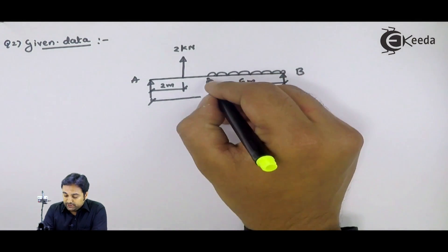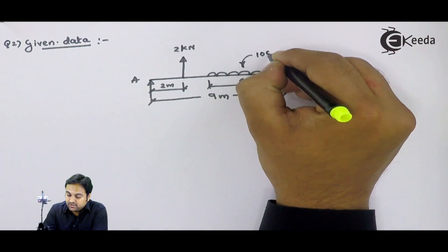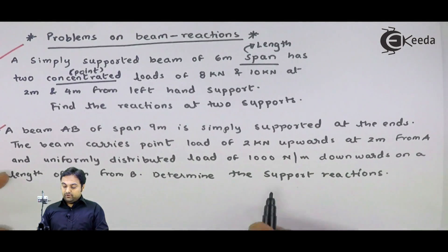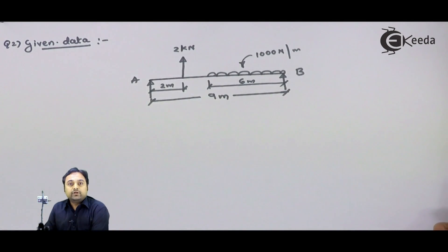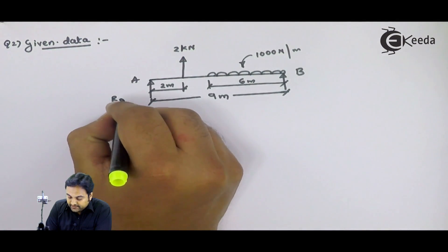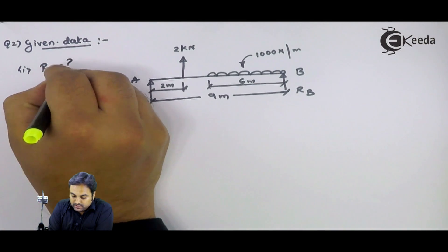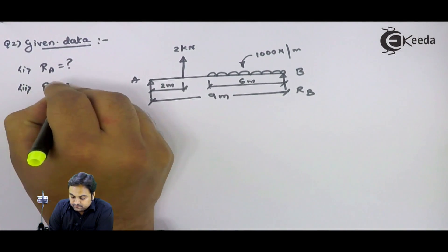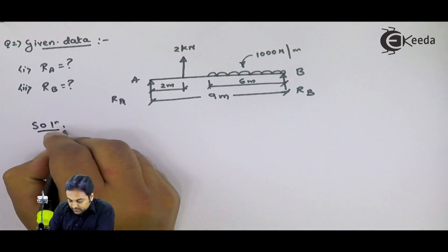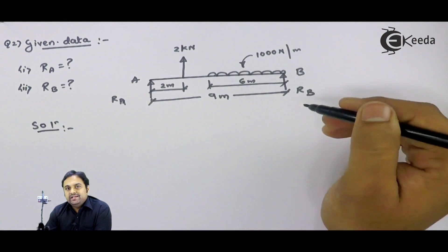Uniformly distributed load — we show it by this symbol. This symbol indicates it is a uniformly distributed load acting downward with a value of 1000 newton per meter. In this question, we have to determine the support reactions. We have to calculate, because of this 2 kilonewton upward force and because of this UDL, how much reaction is offered at A and how much at B. So our unknowns are RA and RB. Whenever the question involves UDL, try to convert UDL into a point load first.